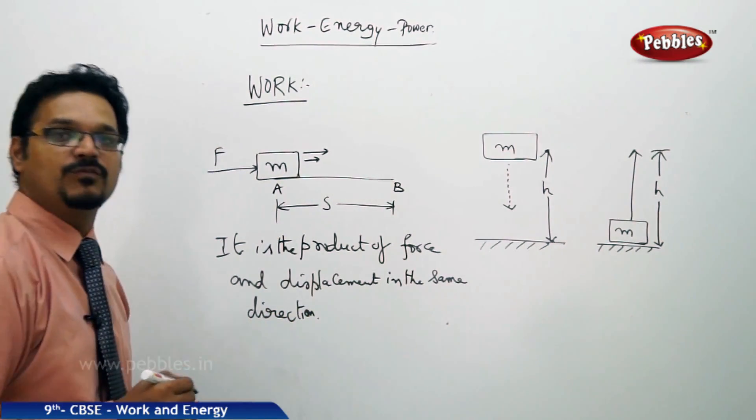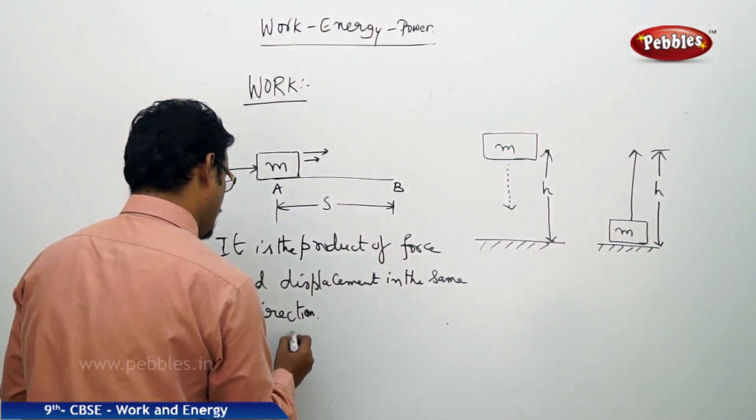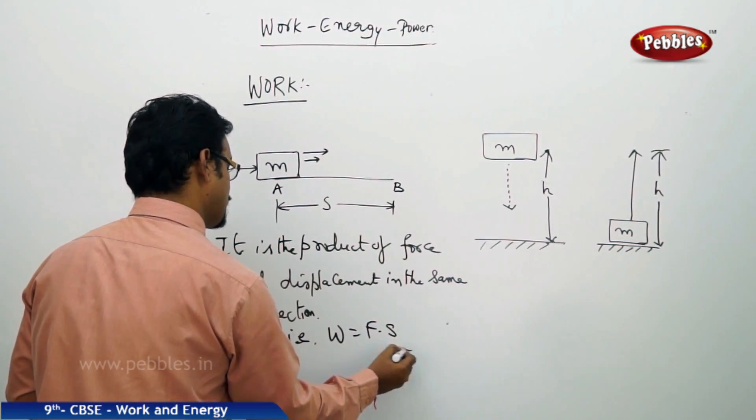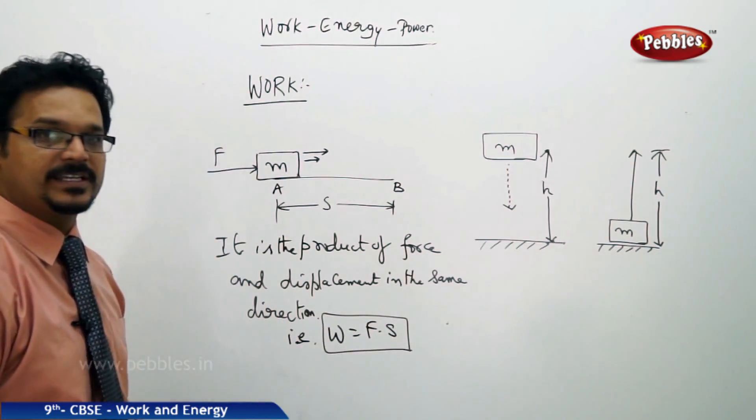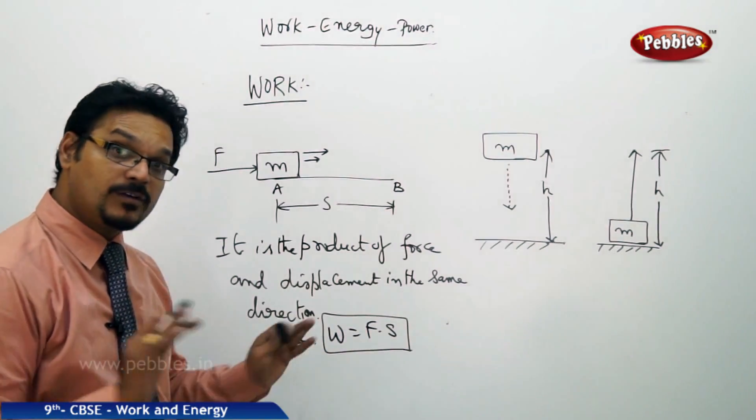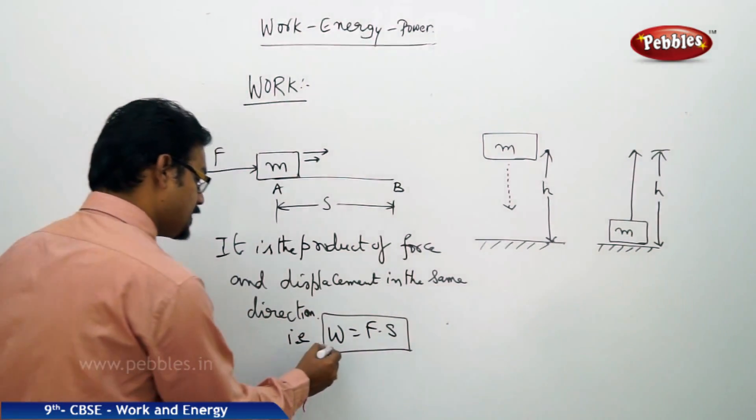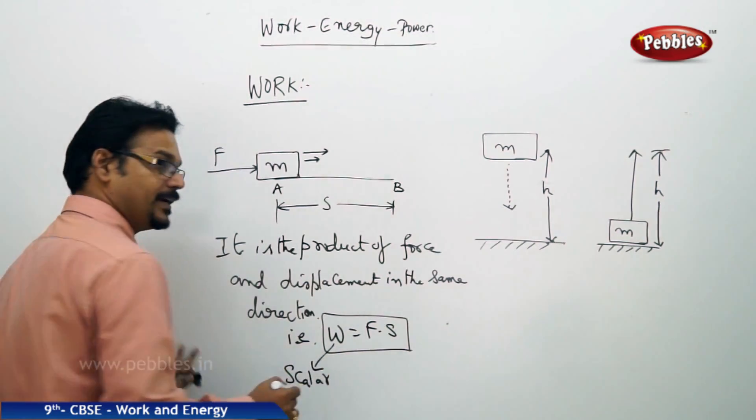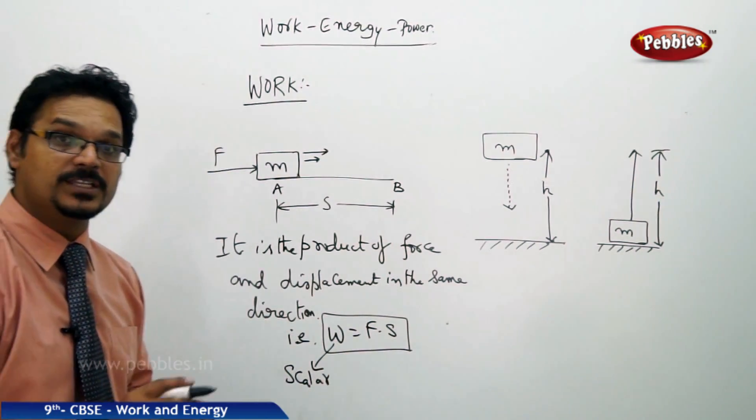It is the definition of work. So the formula is W equals to force into displacement. See, force is a vector, displacement is also a vector, but work is not a vector. Work is scalar. It has only magnitude, there is no direction.